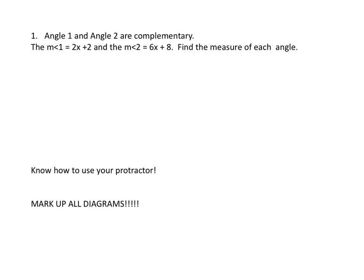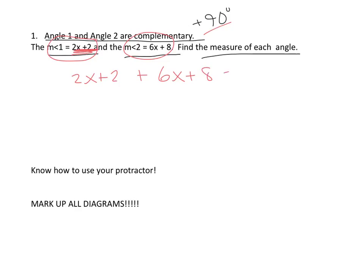Angle 1 and angle 2 are complementary. So I put a note. They add up to 90 degrees. Okay, that should be buzzing in your head. Complementary adds up to 90 degrees. The measure of angle 1 is 2x plus 2. And the measure of angle 2 is 6x plus 8. Find the measure of each angle. So if they're complementary, it means that this and this adds up to 90. So the expression 2x plus 2 plus 6x plus 8 equals 90.